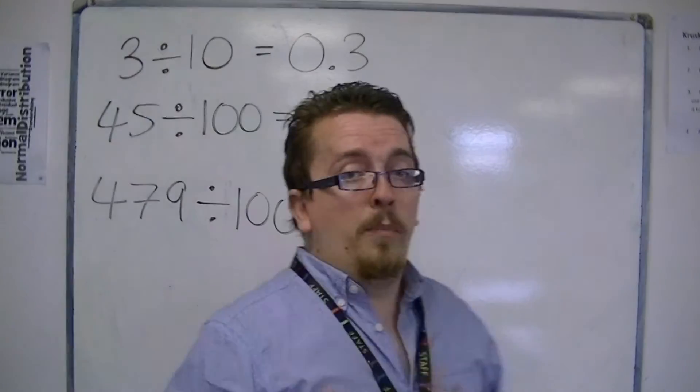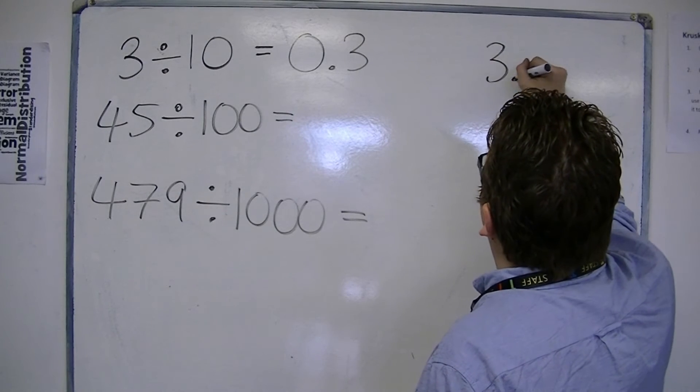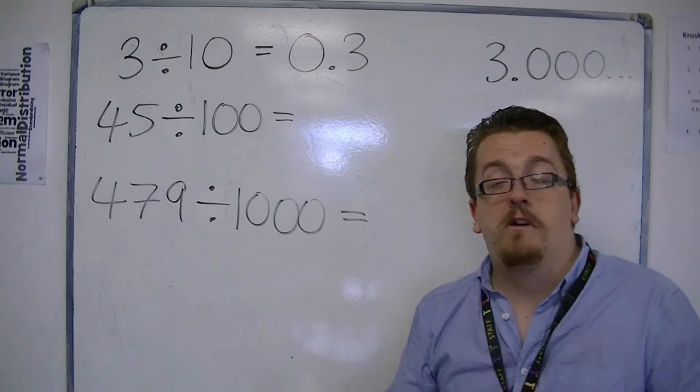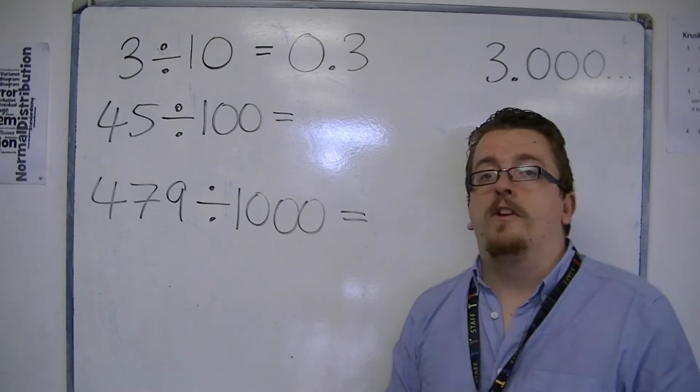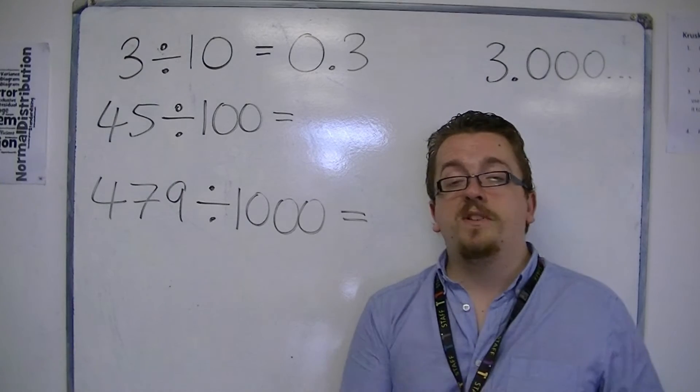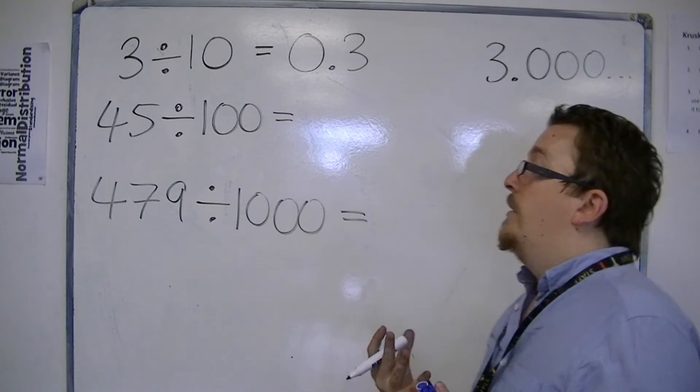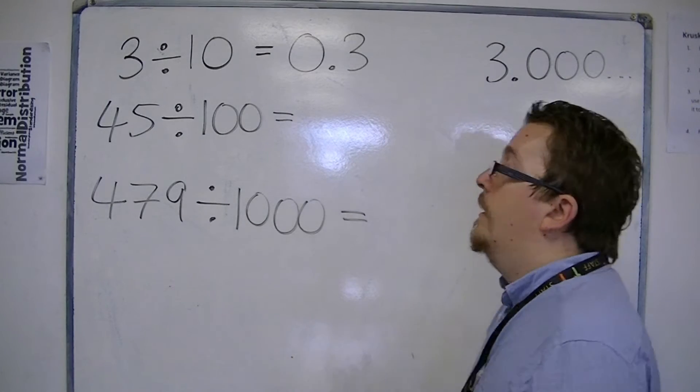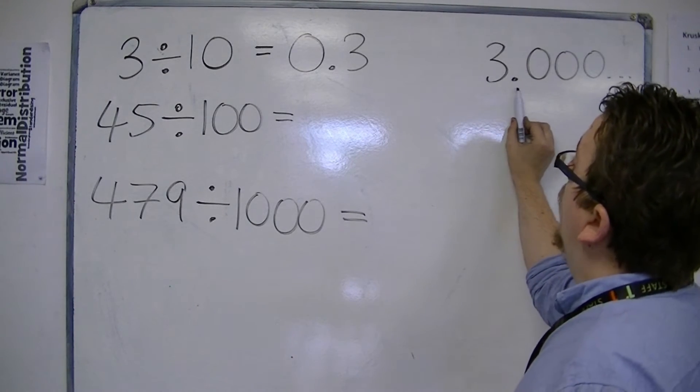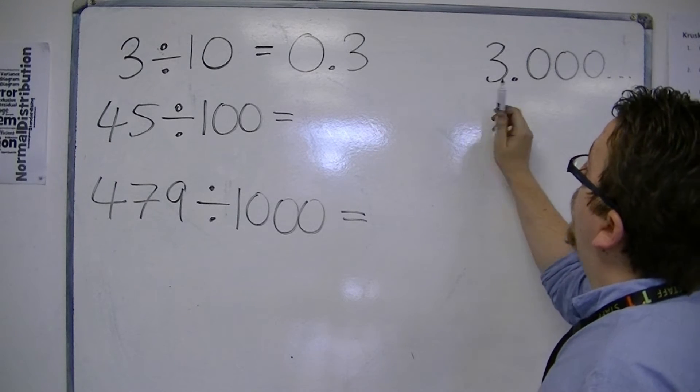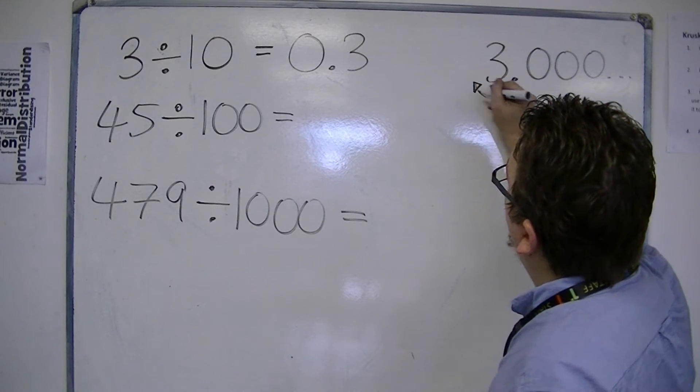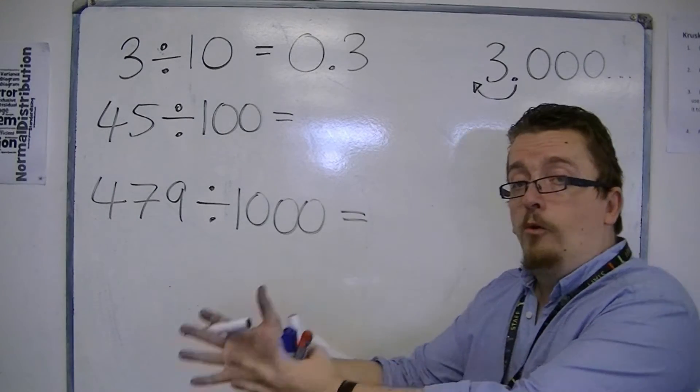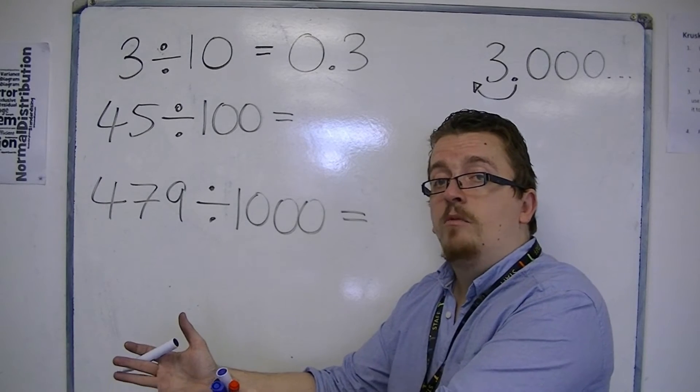Effectively, the number 3 is 3.0000000. We just don't bother writing those zeros. We don't bother writing the decimal place, because we're dealing with a whole number. But the number 3 can be written like this. If you divide by 10, the decimal point can be moved one step to the left. So, when dividing by powers of 10, you're always moving the decimal point to the left. When you multiply, you're moving the decimal point to the right.